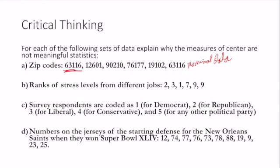Ranks of stress levels from different jobs. Remember, even though these are ranks, they have a numerical value, but this is still ordinal data. What about survey respondents that are coded as 1 for Democrat, 2 for Republican, 3 for Liberal, 4 for Conservative, and 5 for another political party? That's assigning nominal data to a number. This is nominal data and we can't use it.